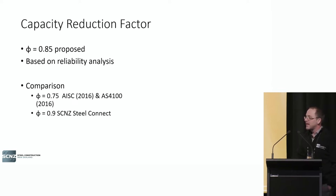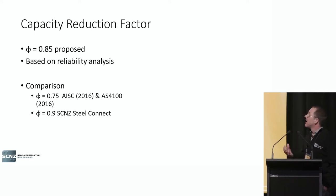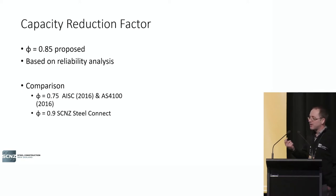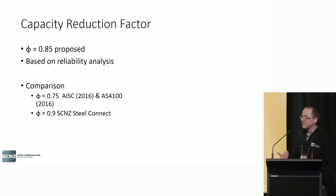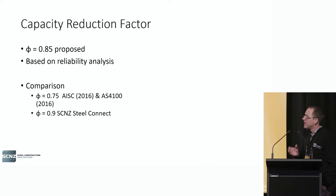The last part of the equation is what capacity reduction factor should be applied. This was looked at by Professor Lip T, who did a reliability analysis based on work by Driver in Canada and came up with a number of 0.85. How does that compare to what's currently used? AISC uses 0.75. The Australians have copied that — 0.75. Interestingly, previously in Steel Connect, we used 0.9, taken from an earlier Australian Steel Institute publication. But if we go back to the mathematics of the statistical reliability, 0.85 seems to be the appropriate capacity reduction factor to use.